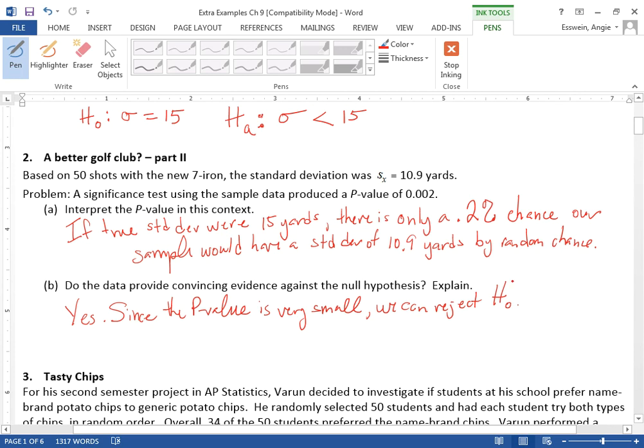So you have to say what that means in context, because that sentence could apply to a lot of things. So there's convincing evidence that the true sigma, we can conclude that the true value of the standard deviation with the new club, true sigma with new seven iron, is smaller than 15 yards.